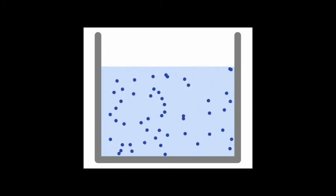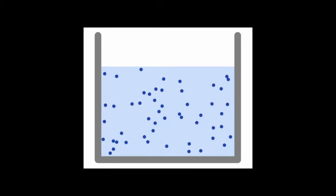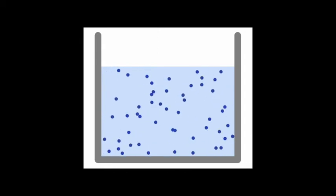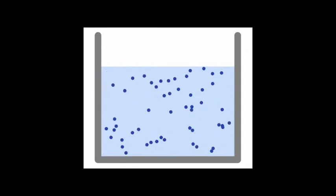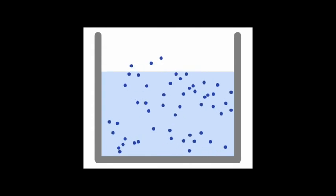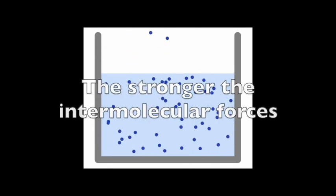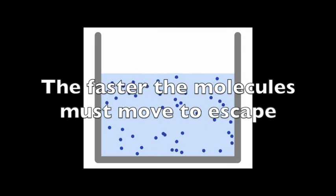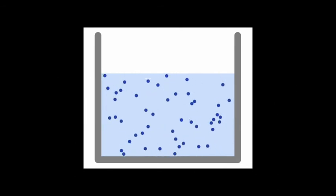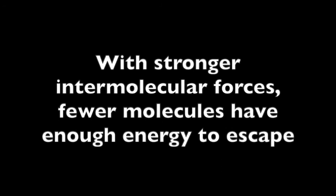If this substance is in contact with the environment, eventually you'll get evaporation or sublimation. The stronger the intermolecular forces are, the faster the molecules have to be moving in order to escape. With strong intermolecular forces, fewer molecules have the energy to escape into the gas phase.